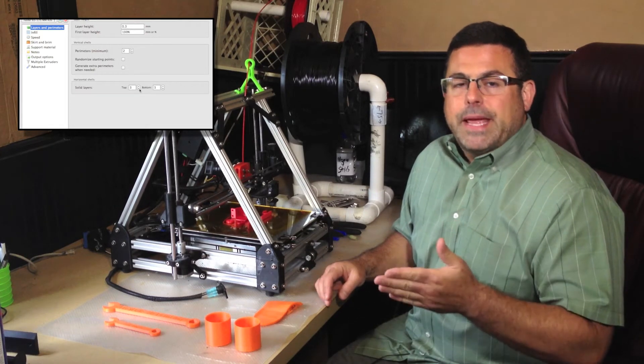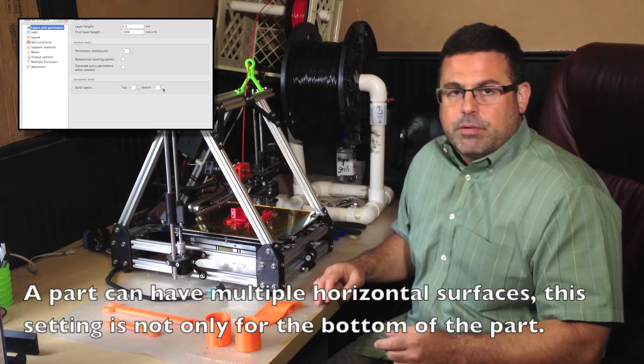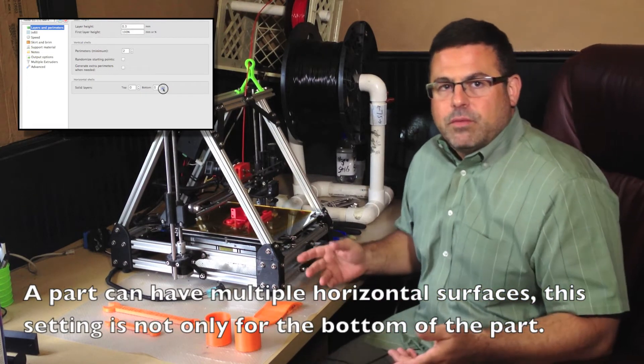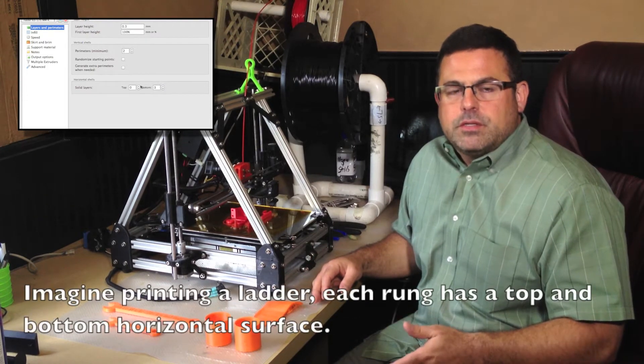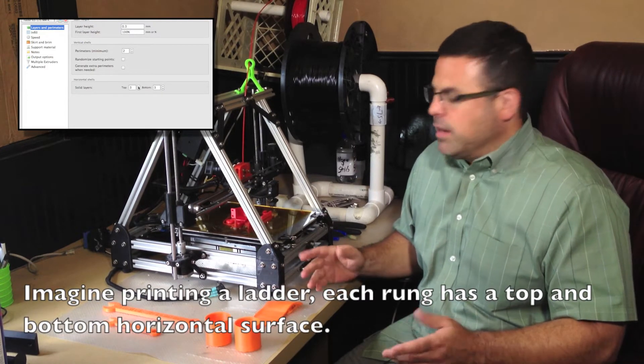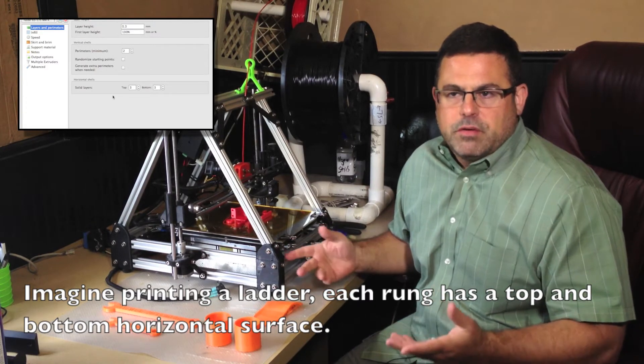Horizontal Shells lets you specify how many layers will be printed on the top and bottom of a horizontal plane. Normally I find you don't have to adjust this from print to print. I usually run three bottom layers and three top layers, and that's fine for printing RepRap parts, brackets, and all sorts of general purpose printing.